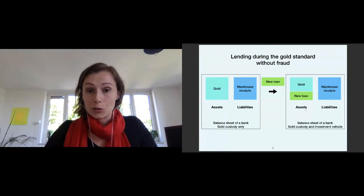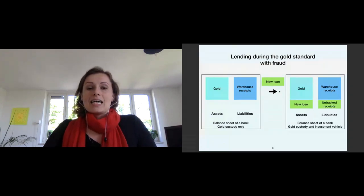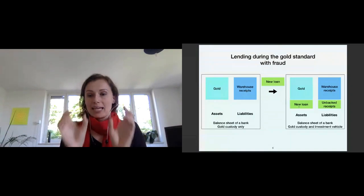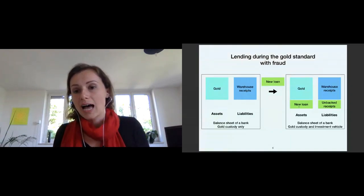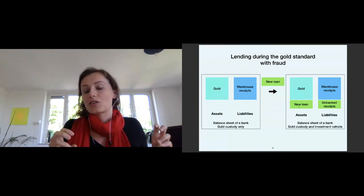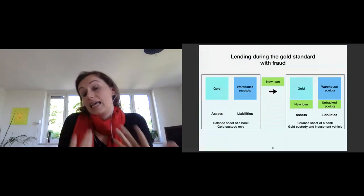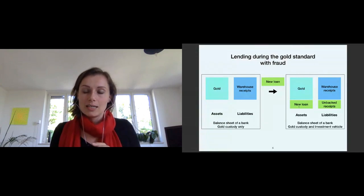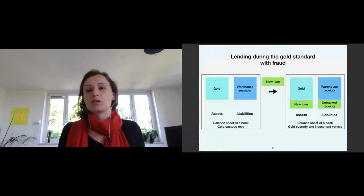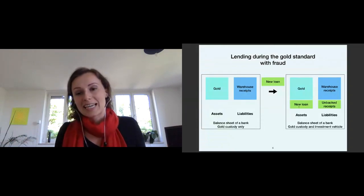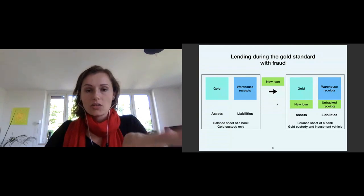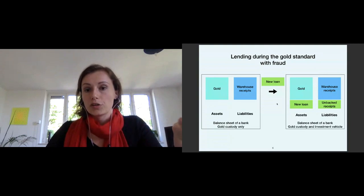Now I'd like to show you how it evolved. A new loan was given out and the balance sheet was simply extended on both sides. It was not that the gold was physically given out — a new loan was placed as an asset, and new warehouse receipts were created that were not backed with gold. This is essentially fraudulent behavior, because if everyone goes back to the bank and wants their gold, the last ones will not get it because there are unbacked receipts in the system.